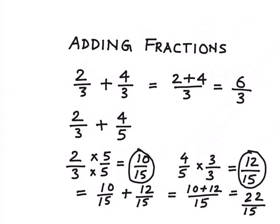Now how do you figure out which number to multiply 2 by 3 and 4 by 5 with? How do you figure out that we have to multiply 2 by 3 with the number 5 and 4 by 5 with the number 3? We'll use the LCM approach for finding these two numbers.